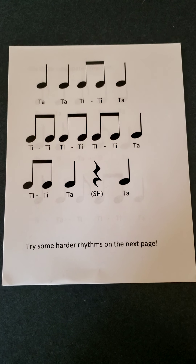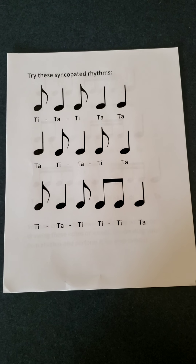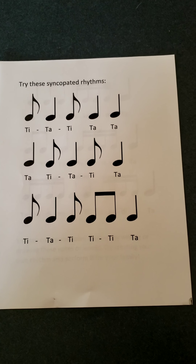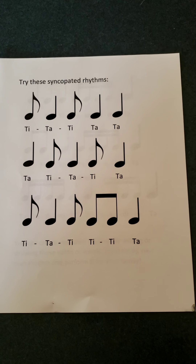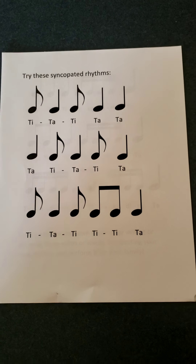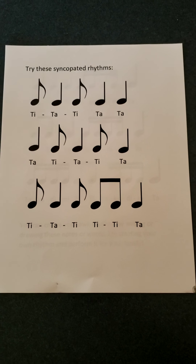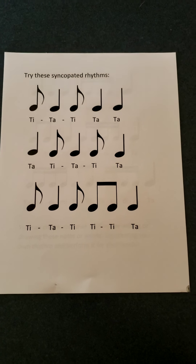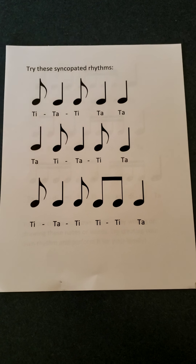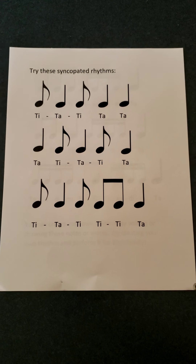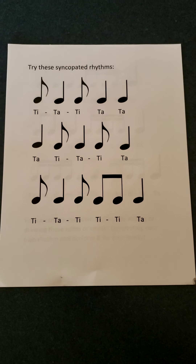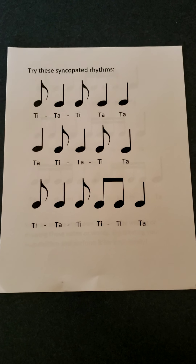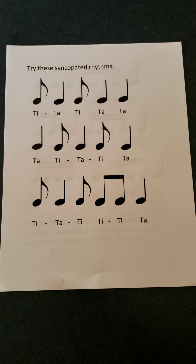If you are accessing this on Facebook, you can try some harder rhythms on the next page. Fourth grade students know how to read a syncopated rhythm. Remember, syncopated means it falls off the beat or it carries over the steady beat. We create syncopated rhythm by breaking up the eighth note pair from ti-ti into ti-ta-ti. Let's start with our steady beat. One, two, steady beat. Let's try the first line together. One, two, ready, go. Ti-ta, ti-ta, ti-ta, ti-ta. Try by yourself. Ready, go. Middle line with me, go. Ta, ti-ta, ti-ta. Try by yourself. Ready, go. Bottom line, ready, go. Ti-ta, ti-ti, ti-ta. By yourself. Ready, go.